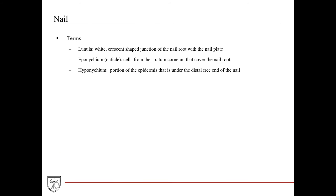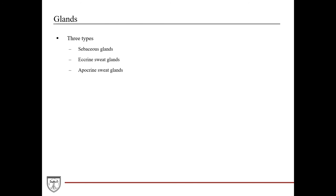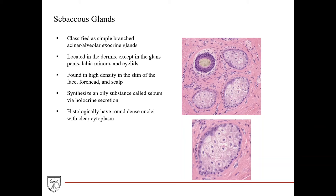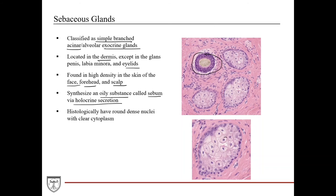Now we'll go through three types of glands found in the skin. Sebaceous glands are classified as simple branched acinar or alveolar exocrine glands, located in the dermis except in the glans penis, labia minora, and eyelids. They're found in high density in the skin of the face, forehead, and scalp, and are often associated with hair follicles. They synthesize an oily substance called sebum via holocrine secretion — produced within the cell's cytoplasm and released by rupturing the plasma membrane, which destroys the cell. Histologically, they have round, dense nuclei and a clear cytoplasm surrounding them.